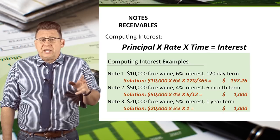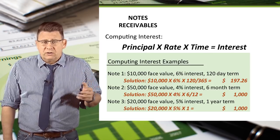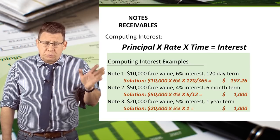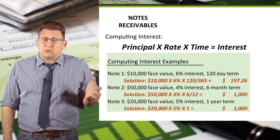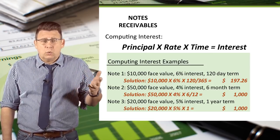Finally, note three is for one year, so it's simply principal times rate times 1.